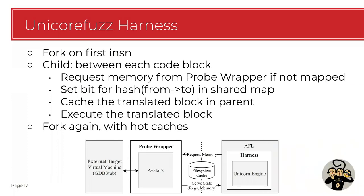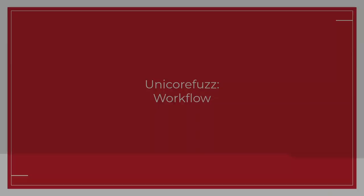On the other side we have the AFL Unicorn harness, and it forks. Fork in Linux is a copy-on-write thing, so every page we touch that is not changed stays the same - it's pretty quick. It's still a syscall so slightly slower than in-process, but actually pretty quick. There's a demo coming up.